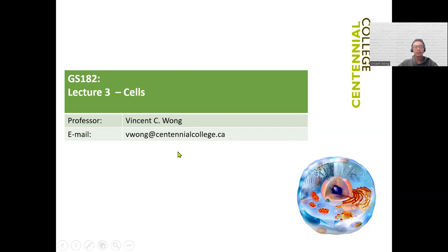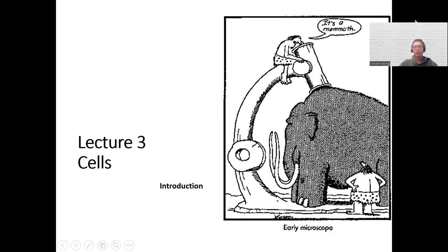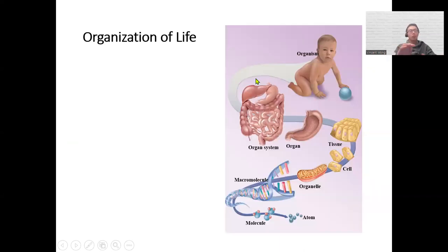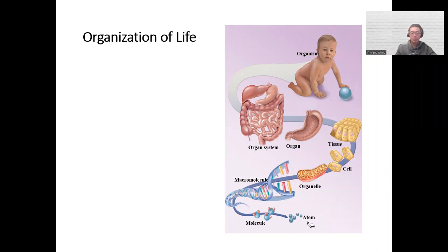Let's get to it. Lecture three is about cells and we're going to start with a brief introduction. You don't need to have a printer for the quiz — everything is done online, you don't need to print anything. In the first lecture we talked about the organization of life: how the smallest building blocks are atoms, and they come together to form molecules.